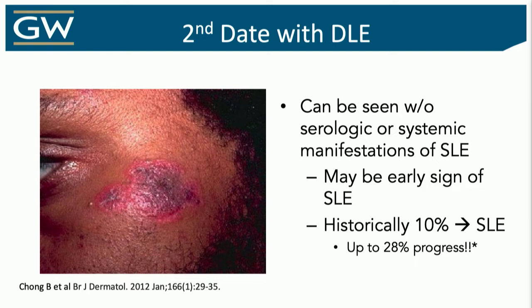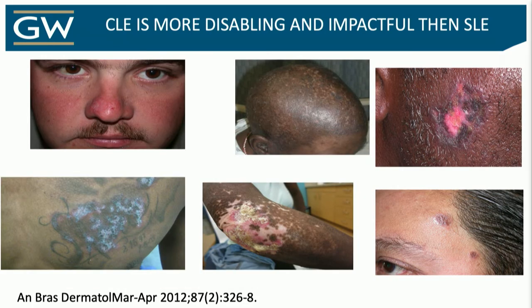We historically talked about the seroconversion rate — it's 10 to 12%, and some studies say up to 20% will progress. There is some data showing that cutaneous lupus is more disabling than SLE, which is remarkable because SLE can kill you. But that goes back to the burden of skin disease — the visibility, the tactile nature, the pruritus, the pain. Even considering a life-threatening disease, patients think this is absolutely worse.